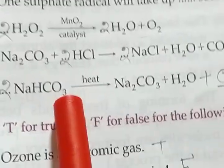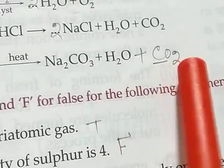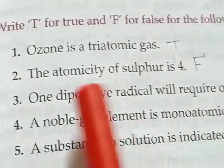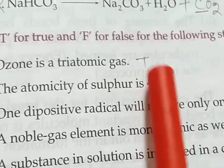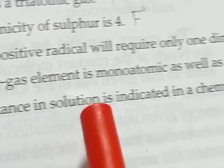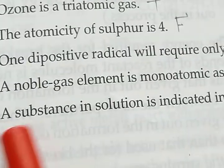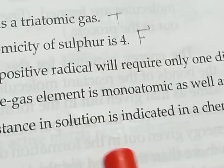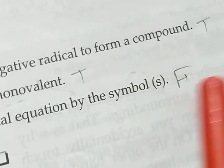Next, true or false. Ozone is a triatomic gas. True. The atomicity of sulfur is 8, but here it says 4. That is false. One di-positive radical will require only one di-negative radical to form a compound. That is true. A noble gas element is monoatomic as well as monovalent. True. A substance in solution is indicated in a chemical equation by the symbol S. S does not indicate aqueous solution. AQ indicates it. That's why it is false.